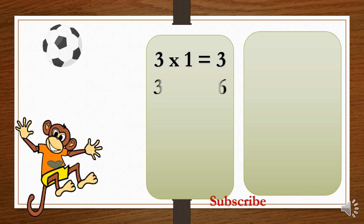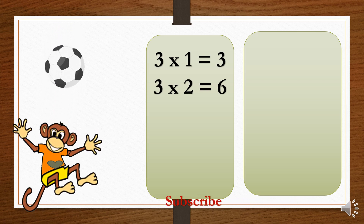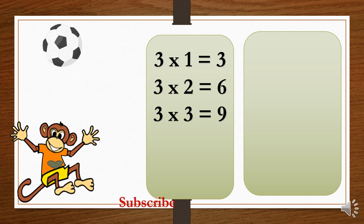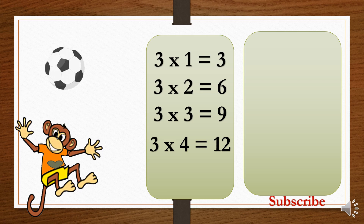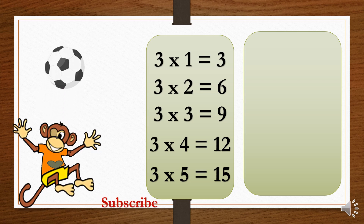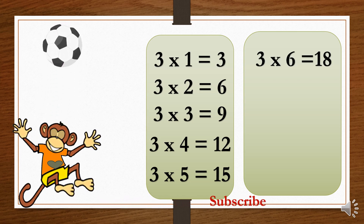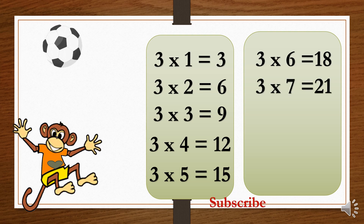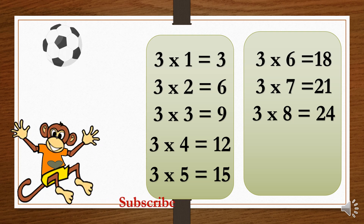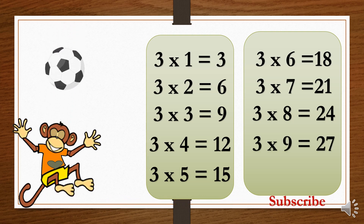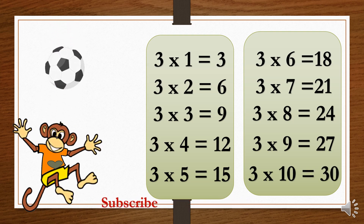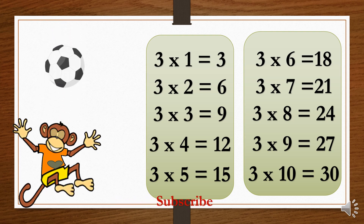3×1=3. 3×2=6. 3×3=9. 3×4=12. 3×5=15. 3×6=18. 3×7=21. 3×8=24. 3×9=27. 3×10=30.